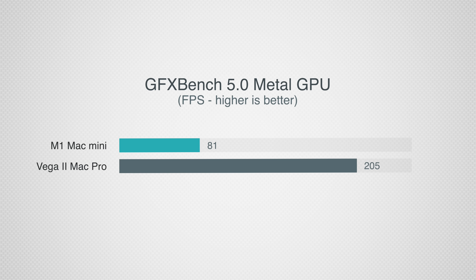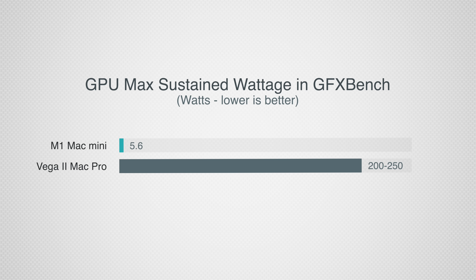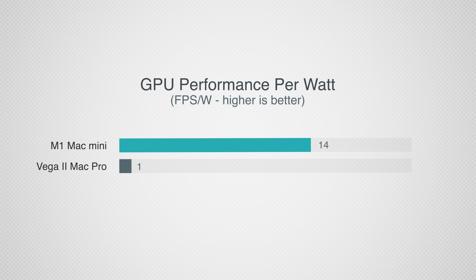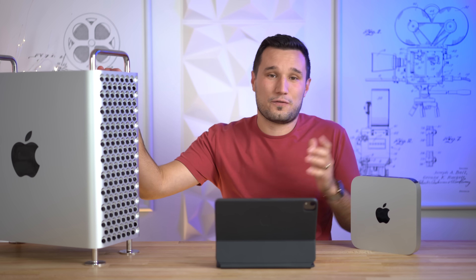For gaming I used GFX Bench, which is optimized for Metal — the same API used by games coming to Mac. Here, instead of four times performance, we got about two and a half times on the Mac Pro. What's absolutely mind-blowing is the Mac Mini's GPU only uses 5.6 watts compared to the Mac Pro's 200–250 watts. That means the Mac Mini gets about 14 frames per second per watt versus roughly one on the Mac Pro.